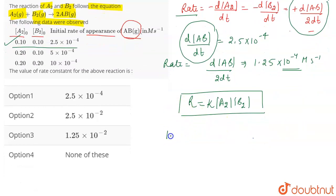So, this will be 1.25 into 10 to the power minus 4 is equal to K. Rate constant is what we have to find. So, this value of rate is for the first data. So, for that, you have to take the concentrations as 0.1 and 0.1.